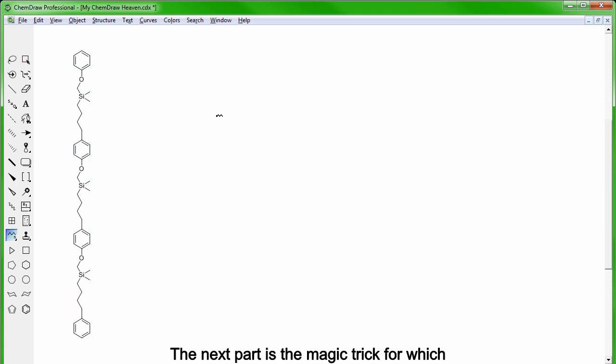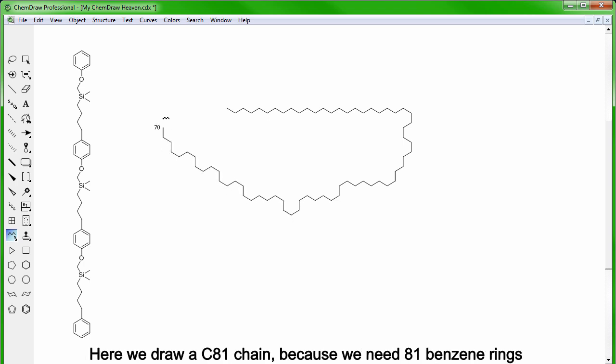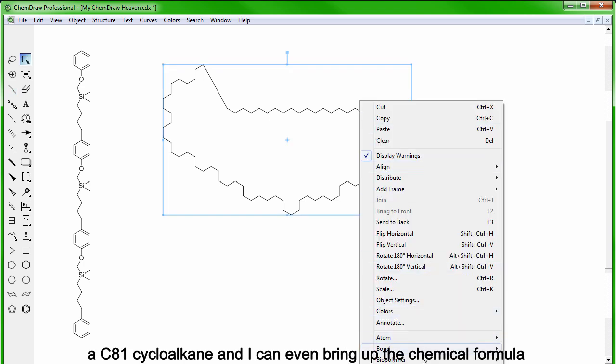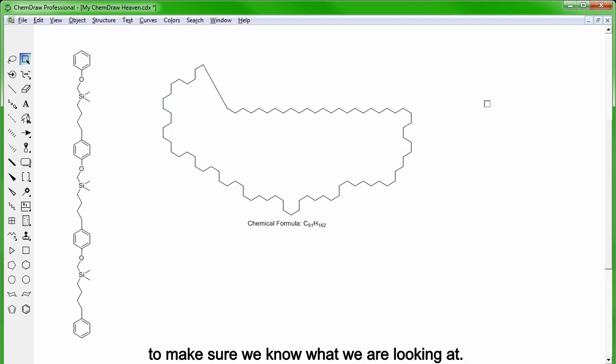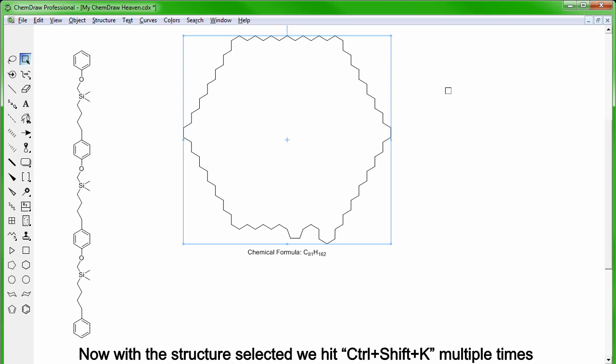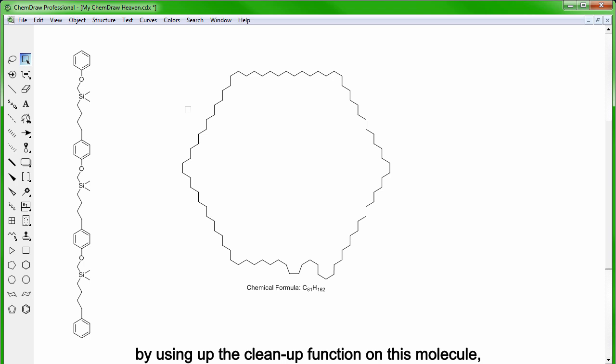The next part is the magic trick for which I'm going to take the chain tool. And remember, if you hold CTRL, the chain will follow your mouse. Here we draw a C81 chain because we need 81 benzene rings to be nicely displayed on the dendromer. We take the single bond tool and close the chain to have a C81 cycloalkane. And I can even bring up the chemical formula to make sure we know what we're looking at.